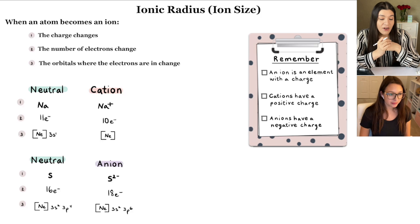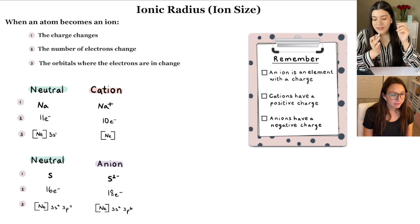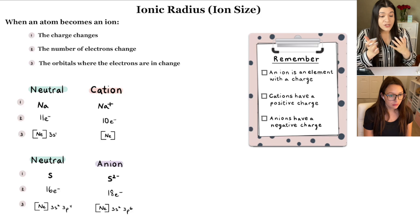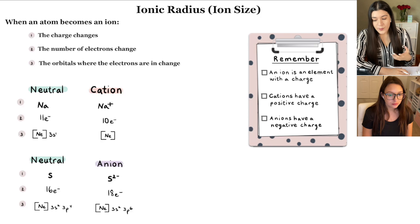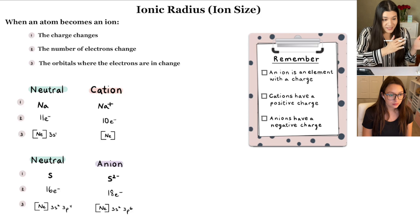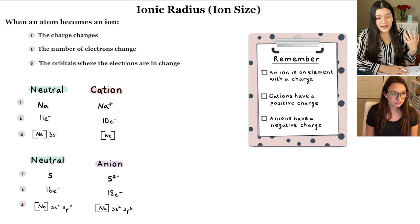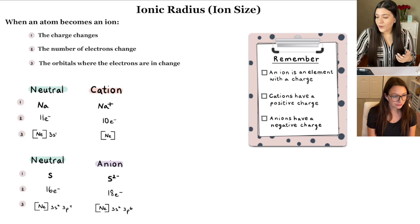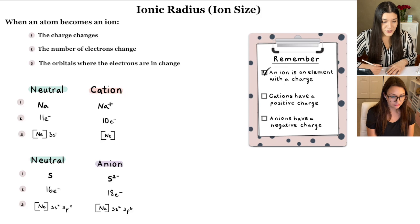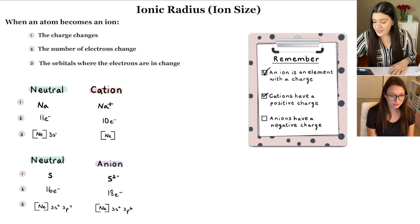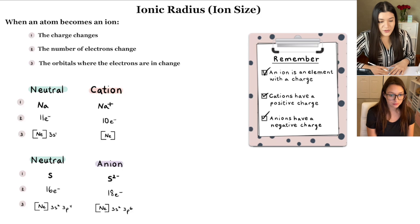The next trend we're going to talk about is ionic radius. It's similar to atomic radius, where we talk about the size of the atom. But when we say ionic, we're talking about an element being charged. An ion is an element with a charge. Cations have a positive charge, and anions have a negative charge.